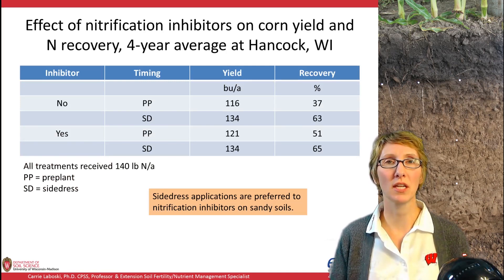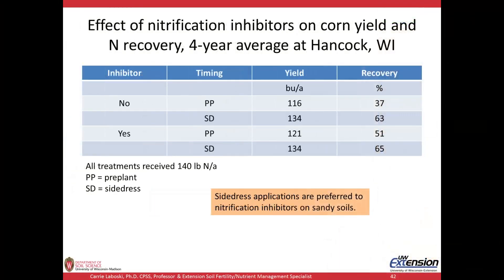Here's an older study from the 1990s looking at the effect of nitrification inhibitors on corn yield at the Hancock Research Station — a sandy soil — showing a four-year average. All treatments had 140 pounds of N per acre (an N-deficient rate to see differences). The nitrification inhibitor used was DCD, and application timing was pre-plant versus side dress. Pre-plant with no inhibitor yielded 116 bushels; with inhibitor, 121 bushels. But side dress with no inhibitor yielded 134 bushels — and side dress with inhibitor still yielded 134 bushels. The inhibitor didn't help at side dress timing.